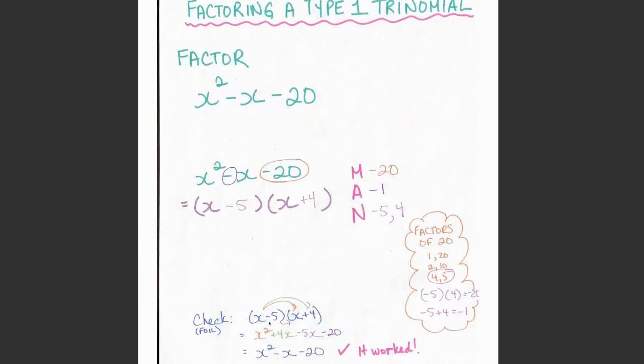If I have (x - 5) times (x + 4), I'm going to do x times x, which gives me my x², x times 4, which gives me 4x, -5 times x, which gives me -5x, and -5 times 4, which gives me -20.